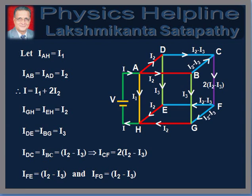Now we are in a position to evaluate the currents in the other branches of the network. Applying the junction rule at D and B, we get currents in the wires DC and BC are each equal to I2 minus I3. Therefore, current in the wire CF is equal to 2 into (I2 minus I3). Again, applying the junction rule at points E and G, we get currents in the wires FE and FG are each equal to I2 minus I3. Thus, the currents in all the branches of the network are defined.